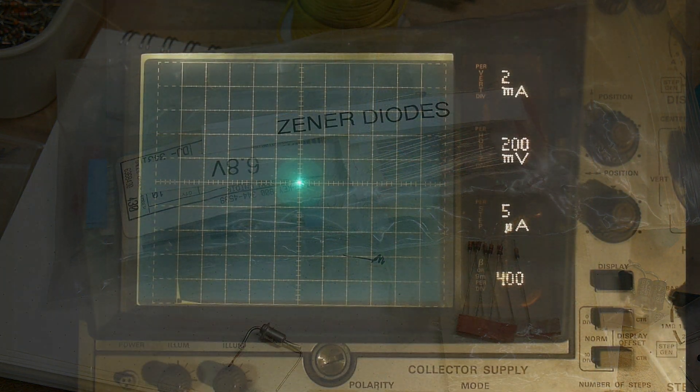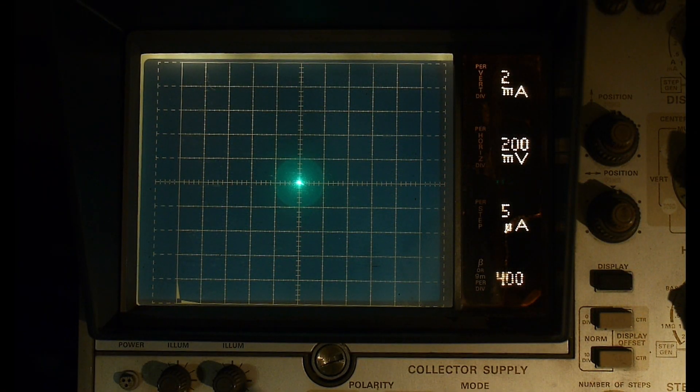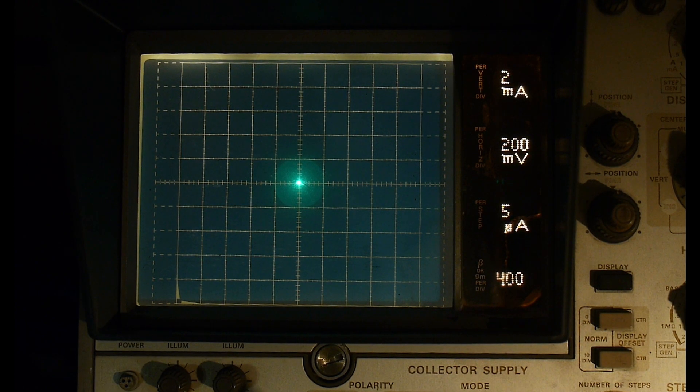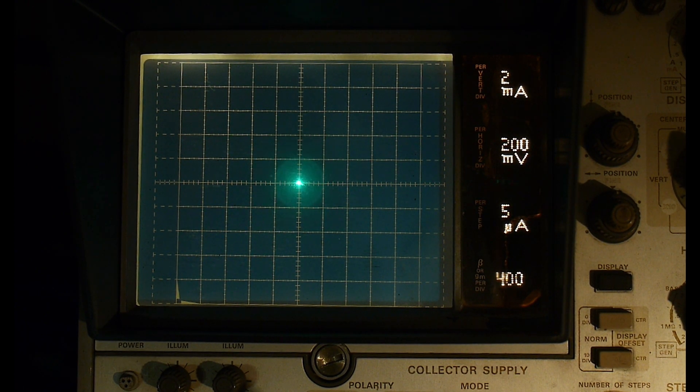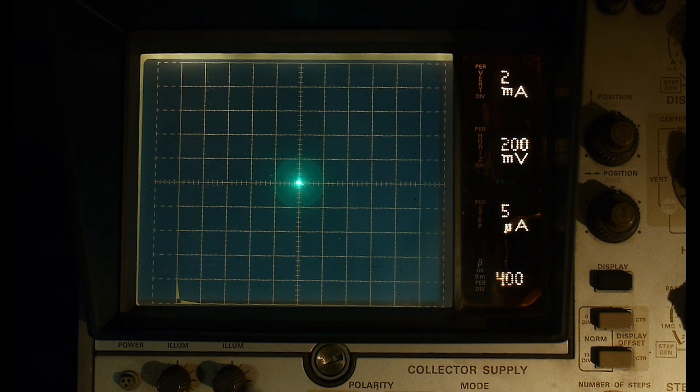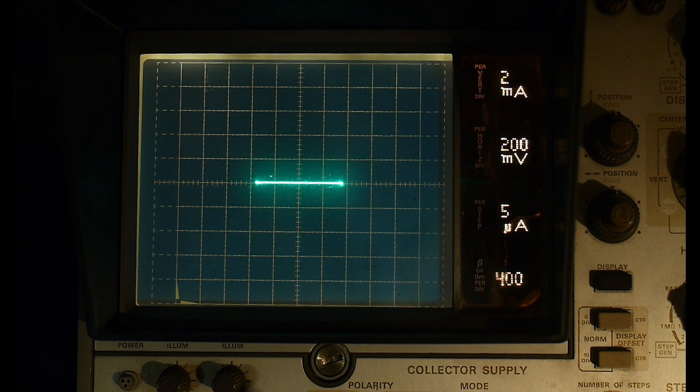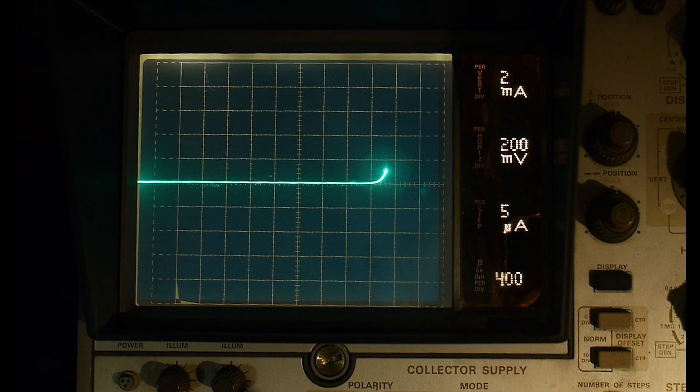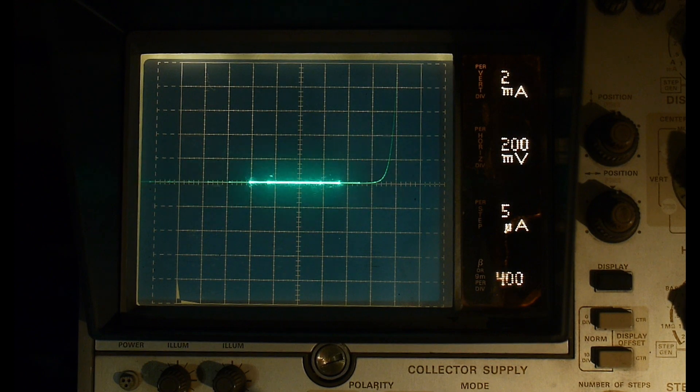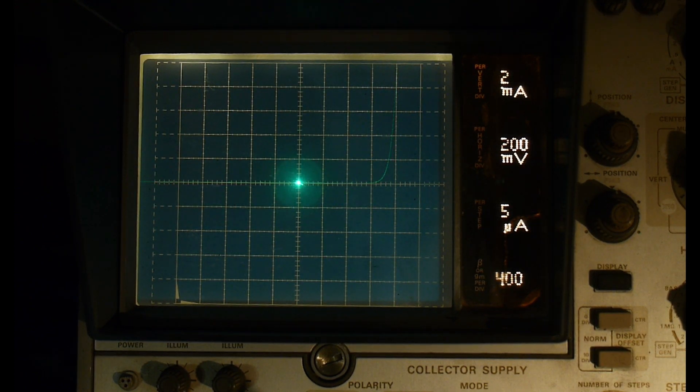All right, so we have the Zener diode in here, and you can see that we're at 0.2 volts per division. So 0.2, 0.4, 0.6, and right at 0.6, 0.7 volts. Yeah, and that looks like a diode in the forward direction, right? This looks like a diode.